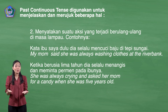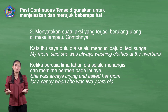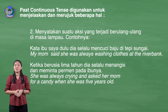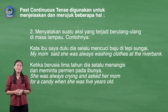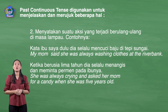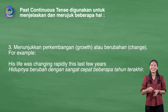Yang kedua, untuk menyatakan suatu aksi yang terjadi berulang-ulang di masa lampau. Contohnya, kata ibu saya dulu dia selalu mencuci baju di tepi sungai — My mom said she was always washing clothes at the riverbank. Ketika berusia 5 tahun, dia selalu menangis dan meminta permen pada ibunya — She was always crying and asked her mom for candy when she was 5 years old.